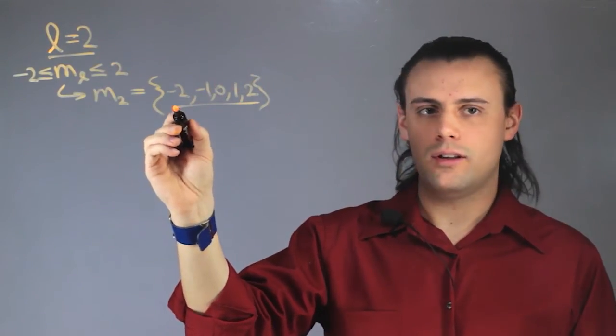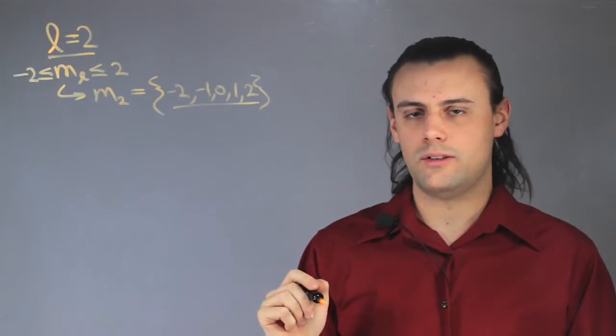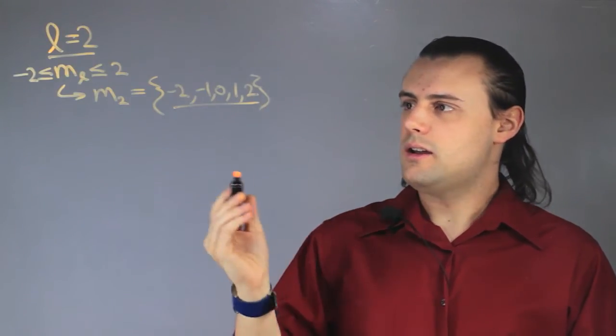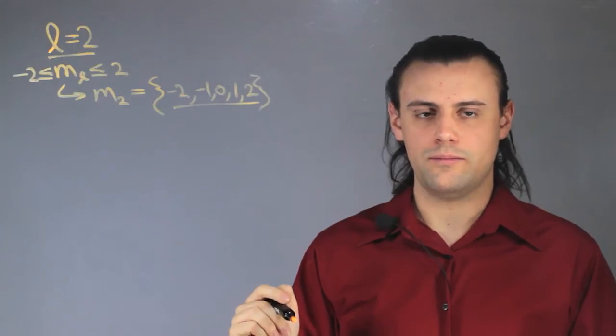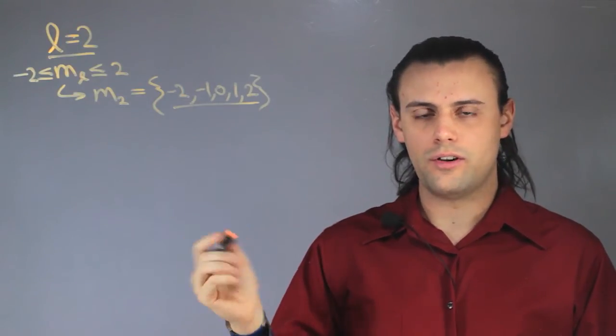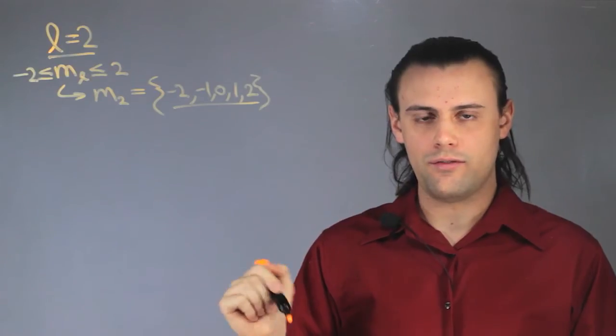So we see that there are 5 different types of d-orbitals. Now, the mathematical function to describe the wave function of an orbital is given by the spherical component of the wave function.